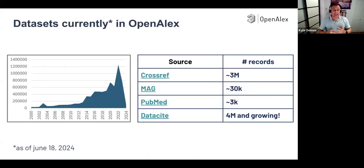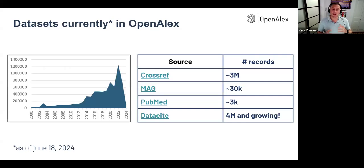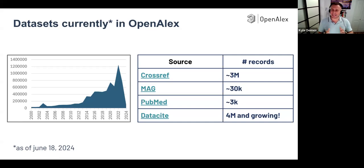Just to give you a sense of the datasets we currently have in OpenAlex as of June 18th: you can see over time there are quite a few. Most historically have come from Crossref — we got about 3 million, because some datasets get into Crossref. We got about 30,000 from Microsoft Academic Graph and about 3,000 from PubMed. We've started ingesting Datasite and already have 4 million, and that's growing every day. Datasite said there were 18 million total — that's the goal. This will be the majority of the datasets we have by far when we finish ingesting.